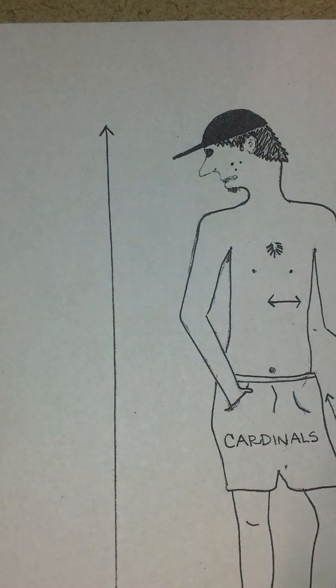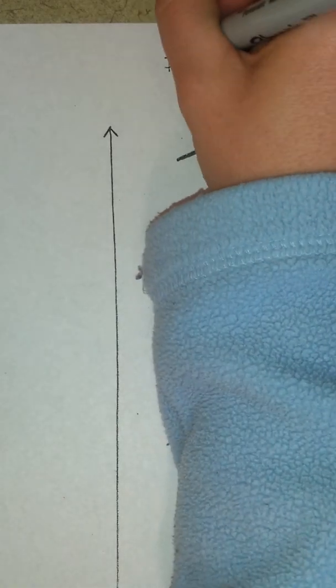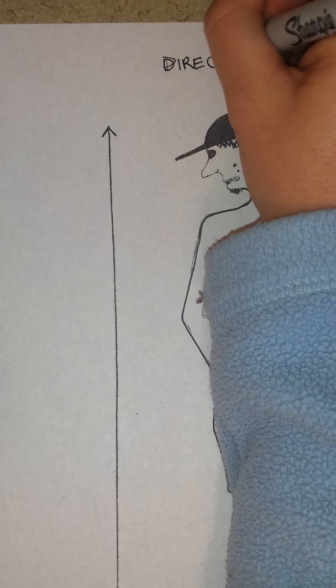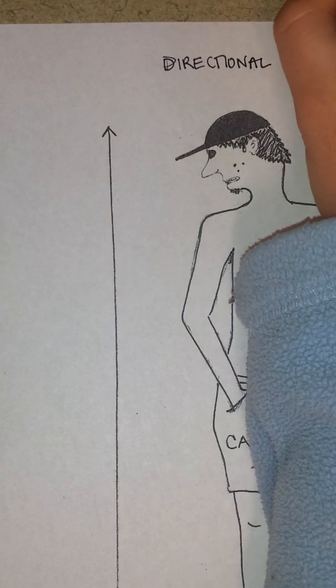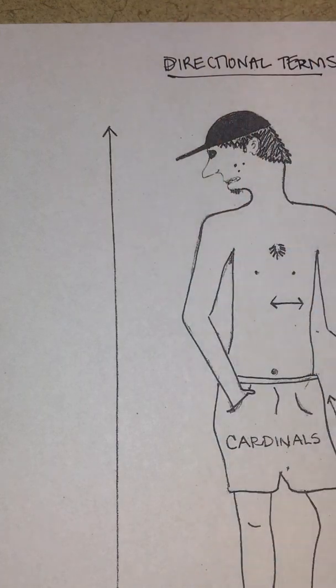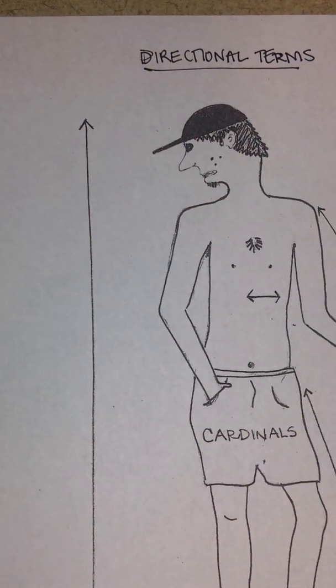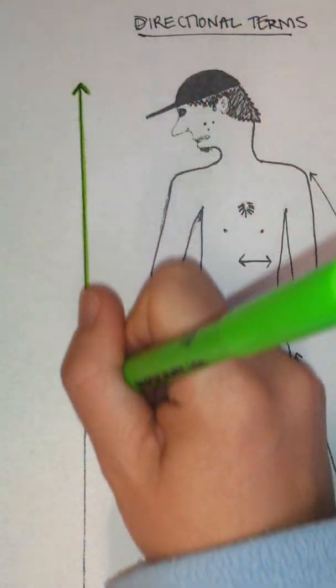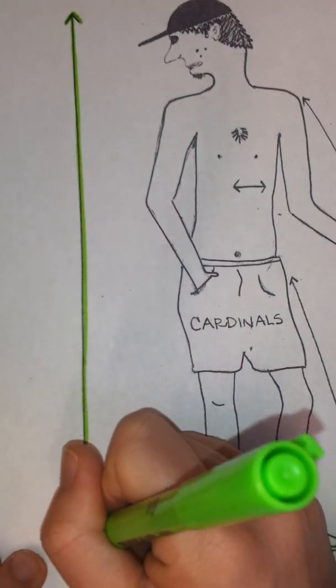This video is titled Directional Terms Used in Anatomy and Physiology. The first terms I'll introduce are used when we mean something is higher up on the human body or lower down on the human body.